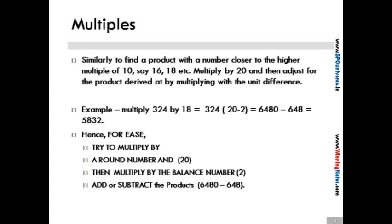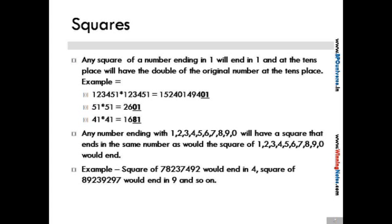Let's see some of the important factors concerning squares. Square of a number ending in 1 will end in 1 and at the tens place will have double of the original number at the tens place. Have a look at this: you are given a number 123451 and if you have to square it, this will have 1 at the units place, and in the original number we have 5 at the tens place, so the new number will have twice the number at the tens place, which is twice of 5, which gives us 10.